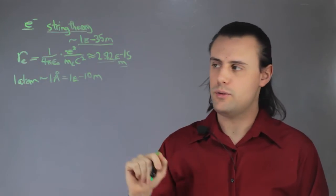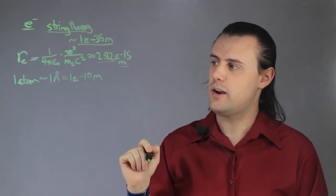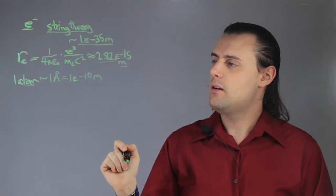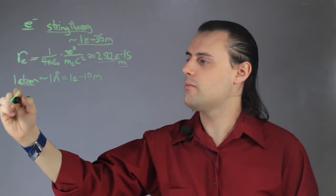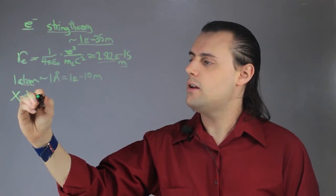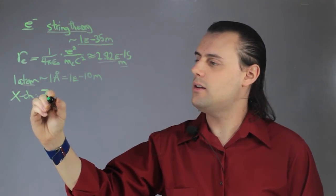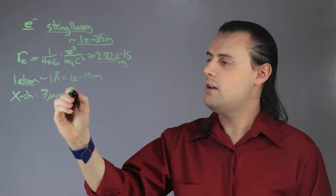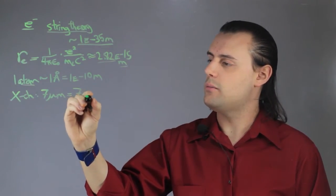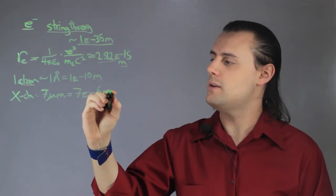Whereas a chromosome, while the size can vary just like the size of an atom can vary, but the order of magnitude of an X chromosome is approximately 7 micrometers. This is equal to 7 times 10 to the negative 6 meters.